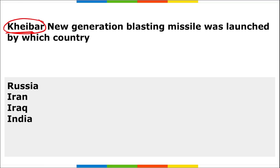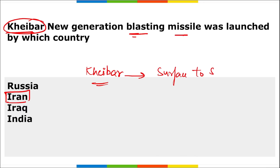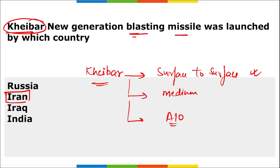Next: Kheber is the new generation ballistic missile launched by which country? It is Iran that successfully tested Kheber. This is a surface-to-surface, medium-range precision missile. It was developed by AIO — Aerospace Industries Organization — which comes under Iran's Ministry of Defense. Kheber is Iran's surface-to-surface medium-range missile developed by AIO.